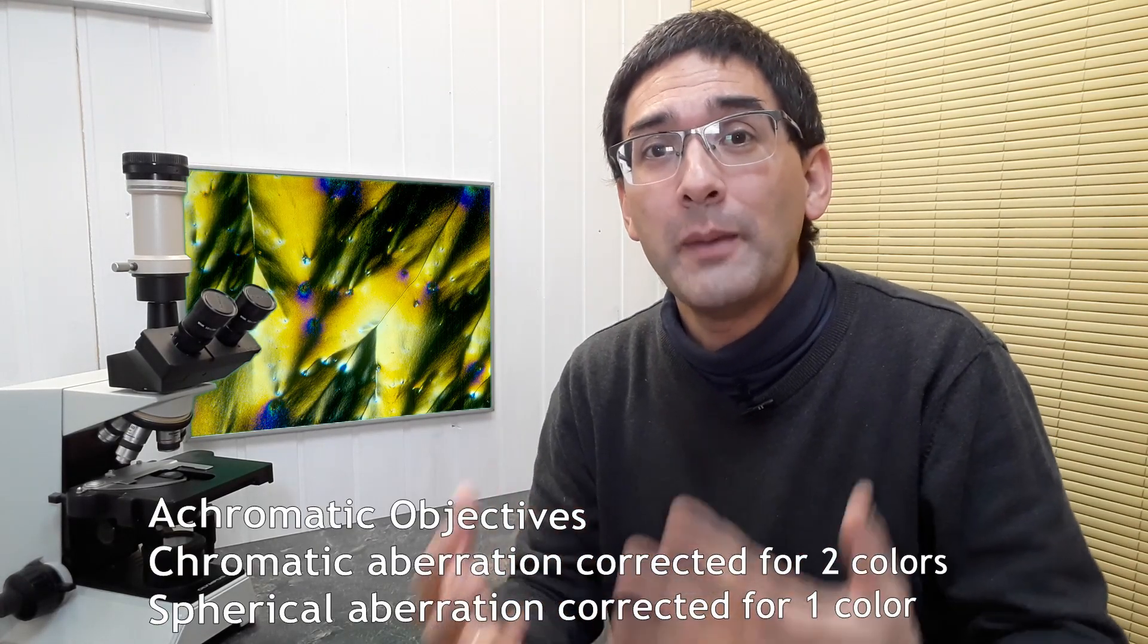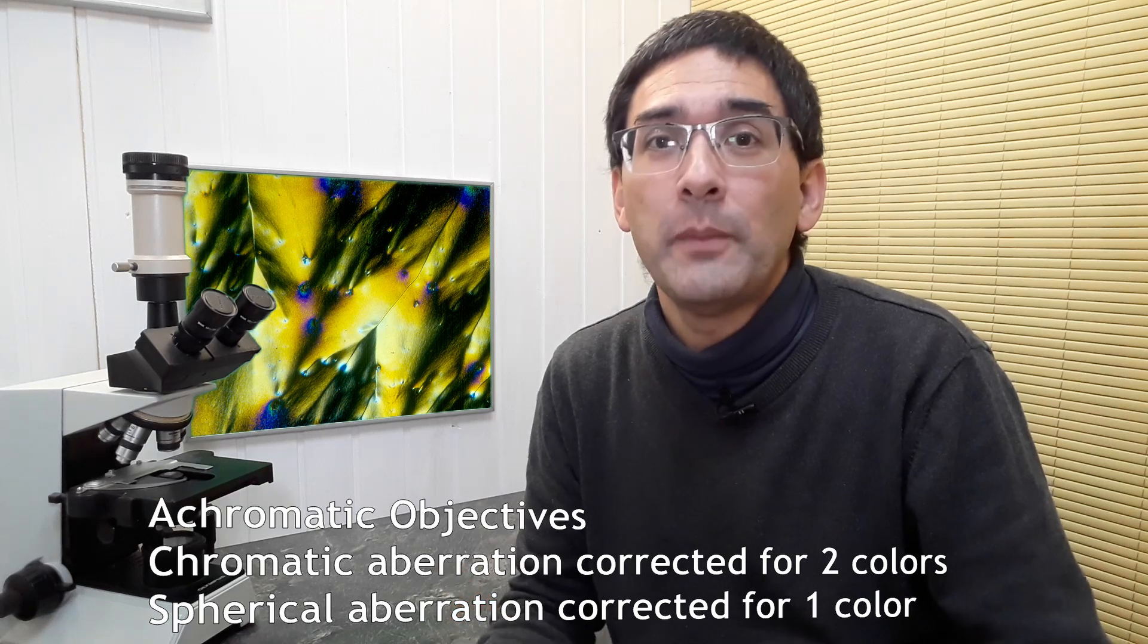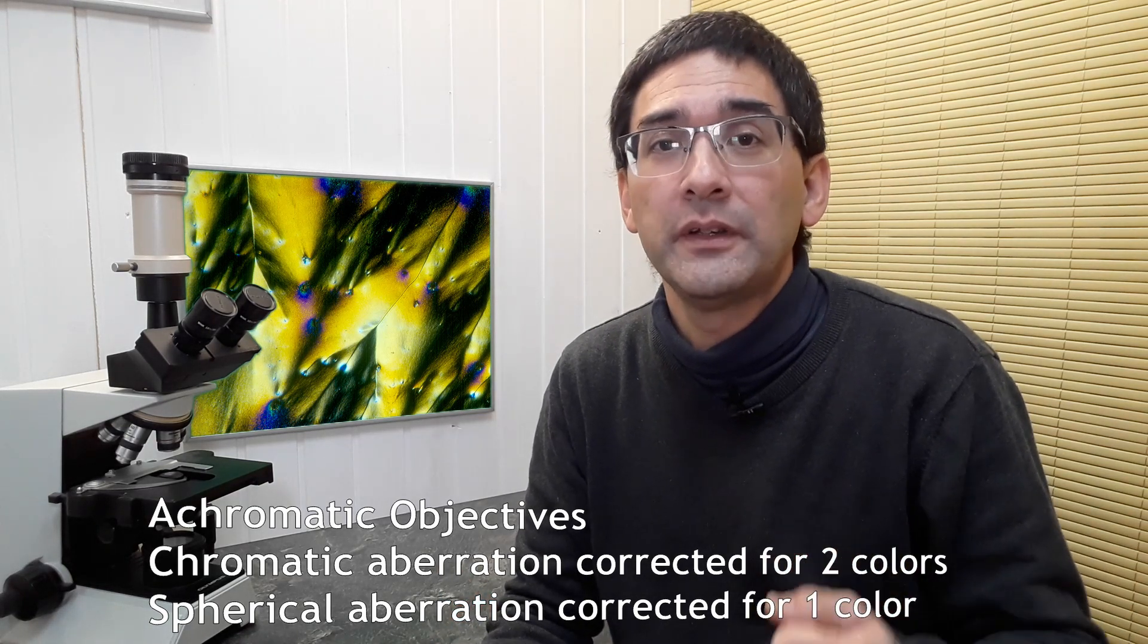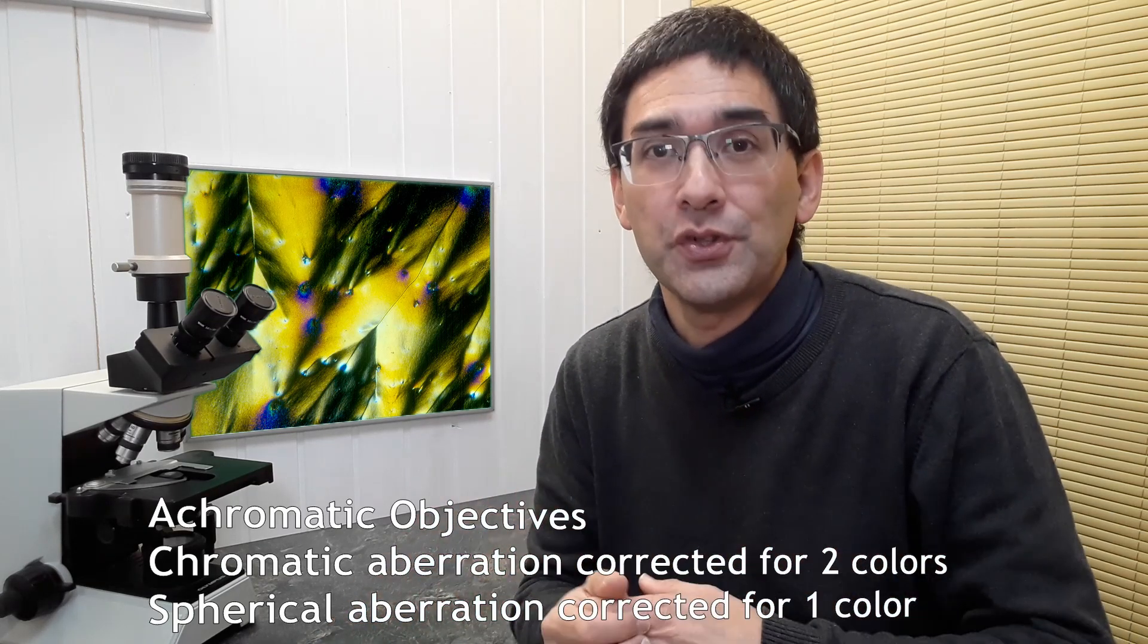Nowadays, when you buy a microscope, a routine microscope usually also used for educational use and routine laboratory use, then these microscopes always come with so-called achromatic objectives. And the achromatic objectives, what they do is they take care of two colors of the light and they correct chromatic aberration for two colors.